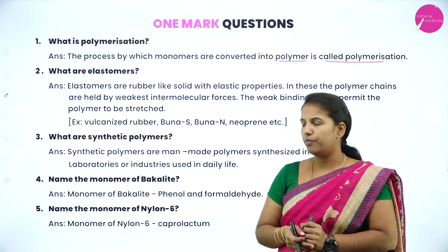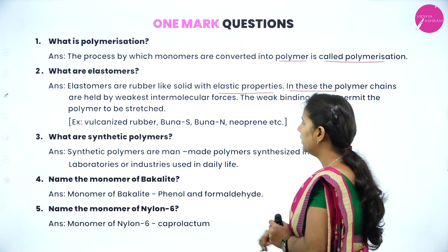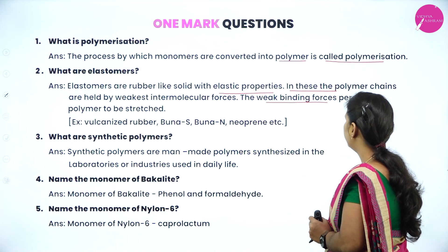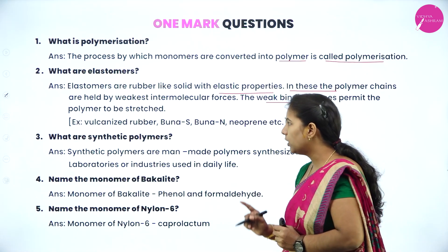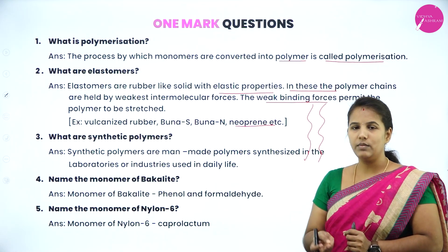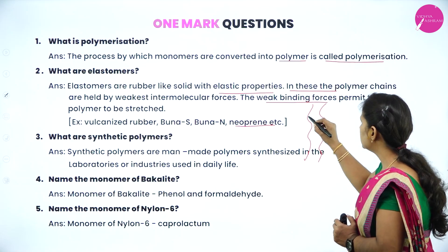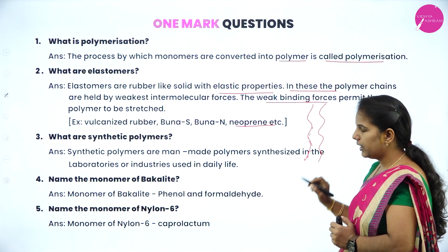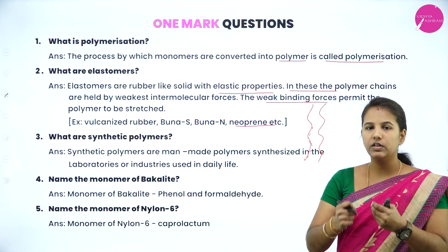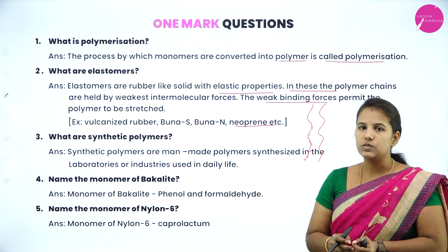What are elastomers? Elastomers are rubber-like solids which have elastic properties. In these polymers, the chains are held together by weak van der Waals forces of attraction, and these weak bonding forces permit the polymer to stretch. Examples include vulcanized rubber, Buna-N, Buna-S, and Neoprene. Rubber is elastic mainly because there is a very weak intermolecular force of attraction between the monomers, which is why a rubber band stretches when pulled.